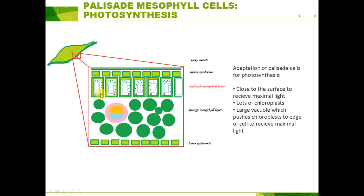Lastly, these palisade cells have a pretty big vacuole which tends to push the contents — most importantly the chloroplasts — out towards the edges of the cell where light exposure is at its maximum.